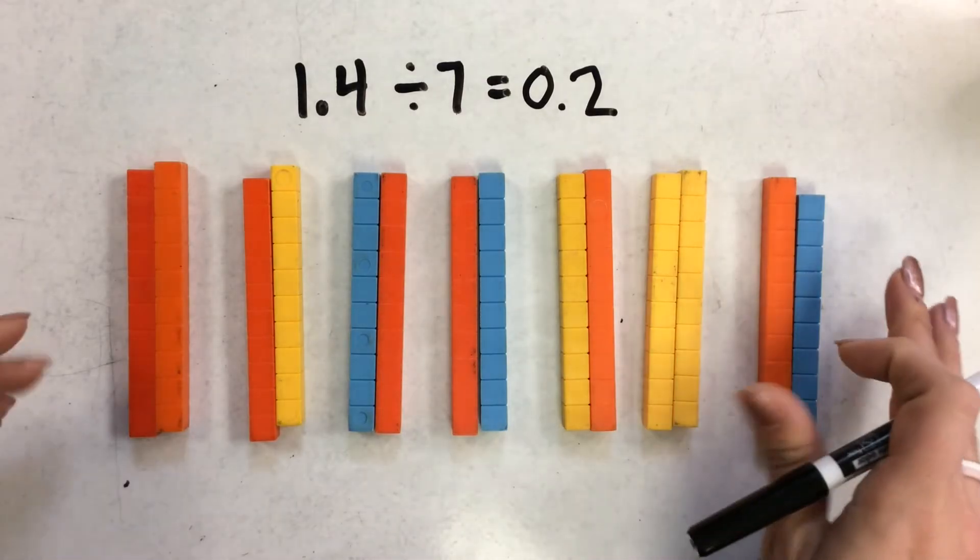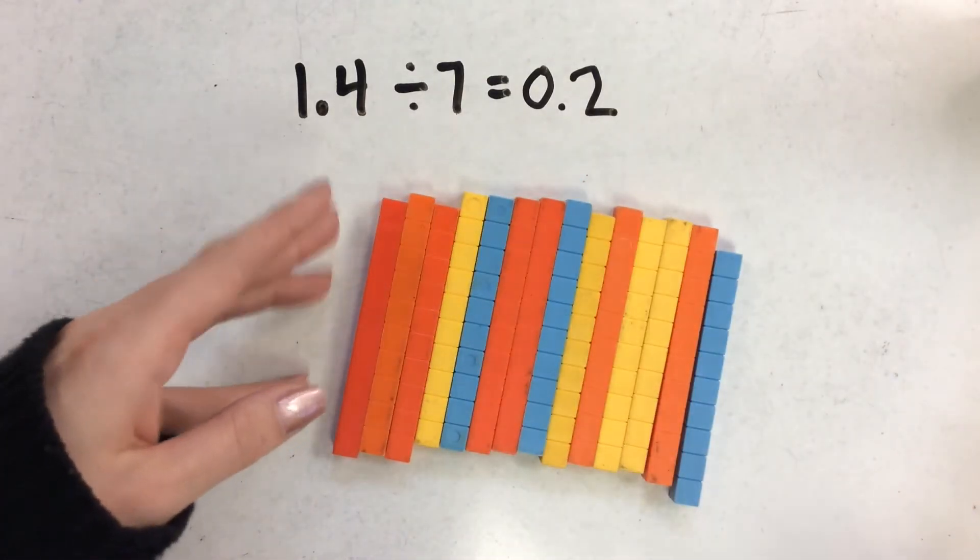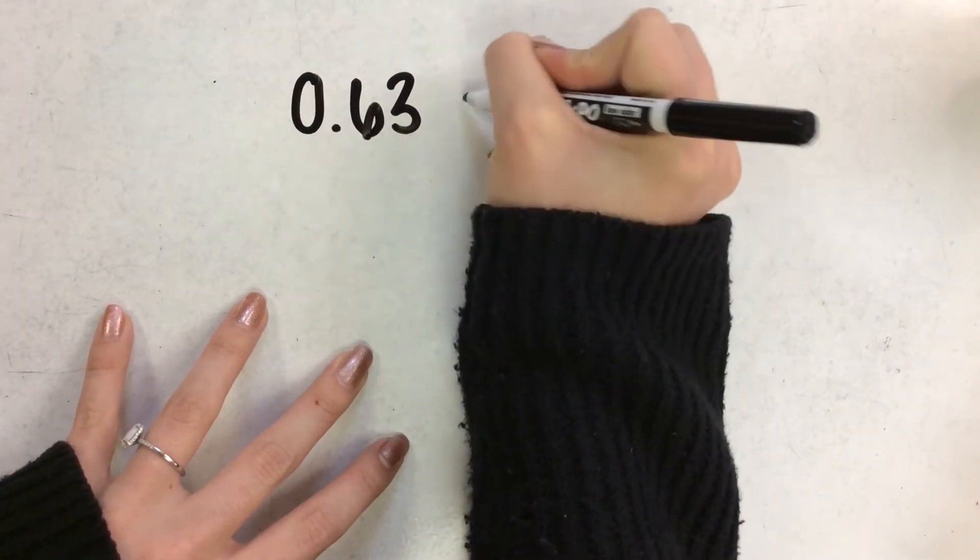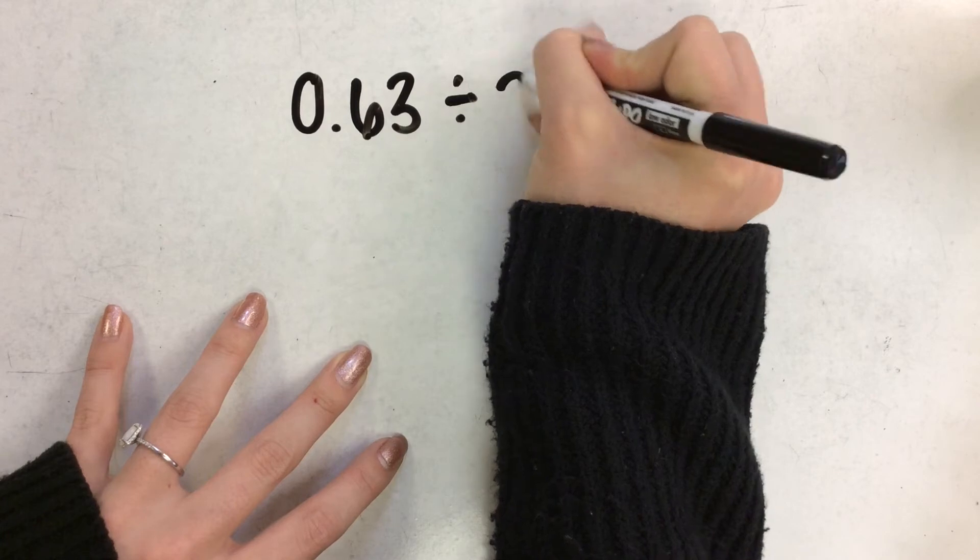All right, let's do another example with base 10 blocks. And we're going to use 0.63, and we're going to divide it into 3 groups.